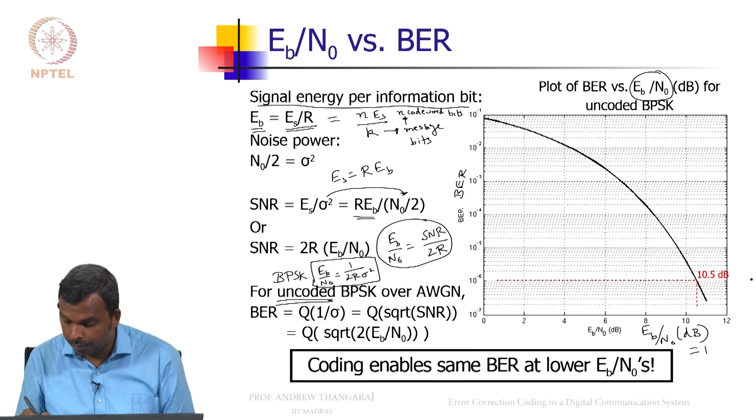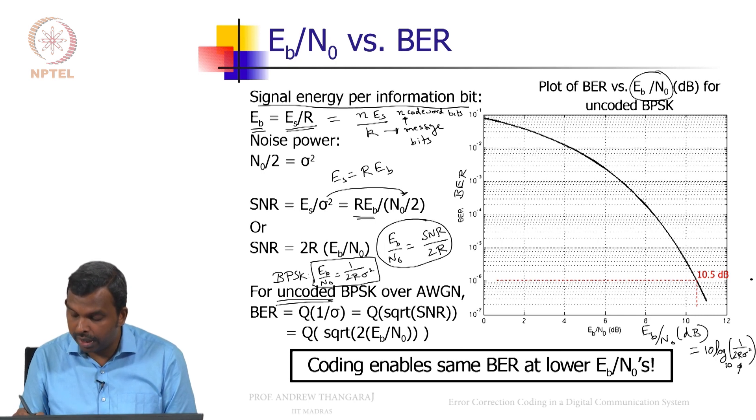So maybe I should write that down here. This is 10 times log base 10 of 1 by 2 R sigma square, whatever rate you have. So if you put rate equals 1, then it is uncoded.